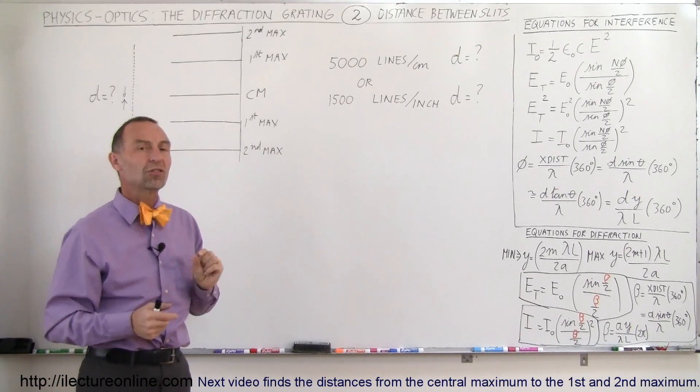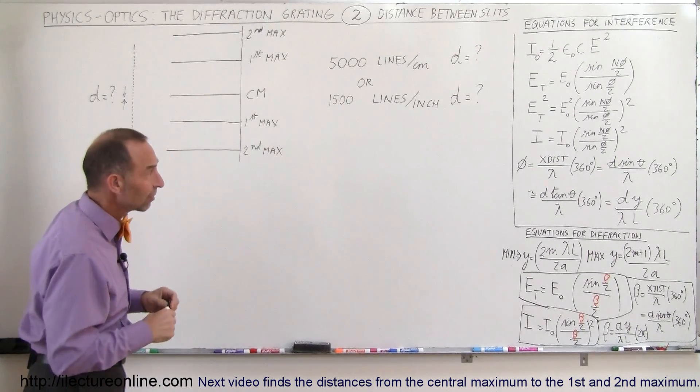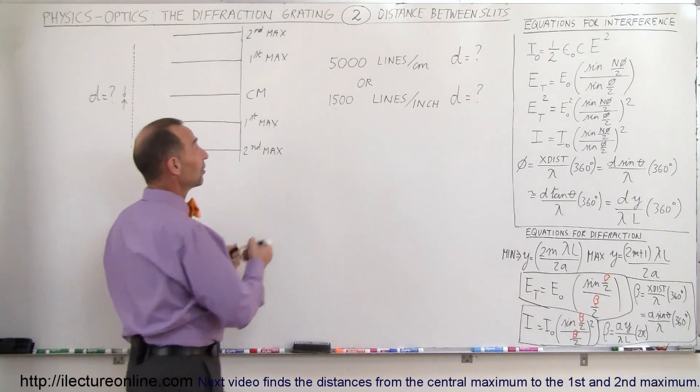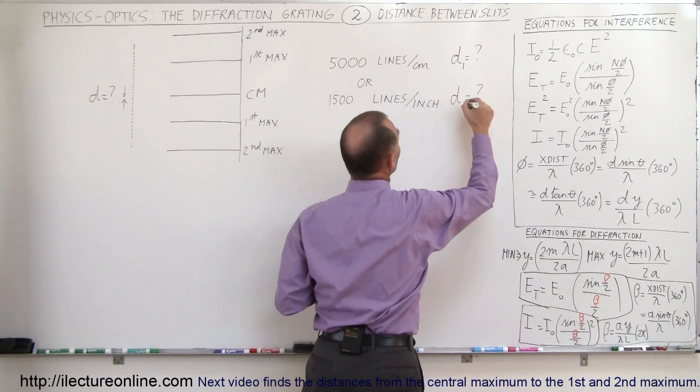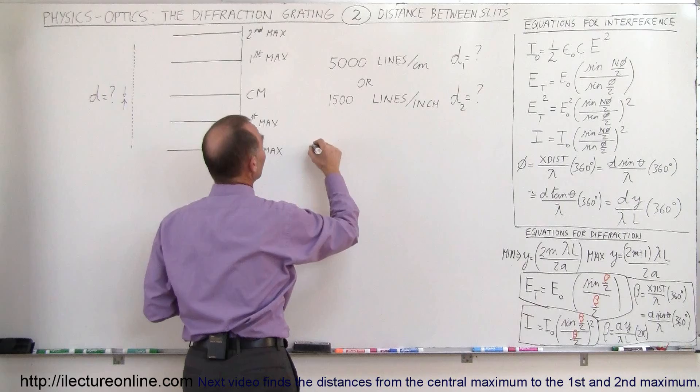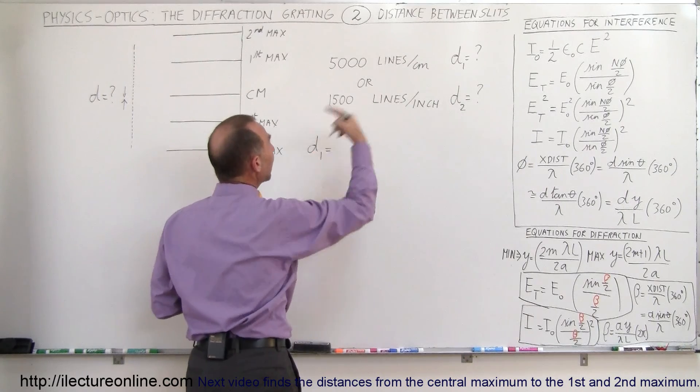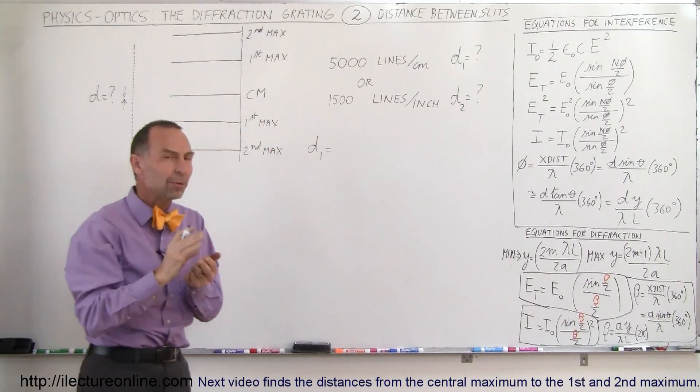How do we find the separation distance then between any two adjacent slits? It's actually pretty simple. For example, if we call D1 this and D2 that, what we simply do is that D1 is simply the inverse of the number of lines per centimeter but then converted to meters.